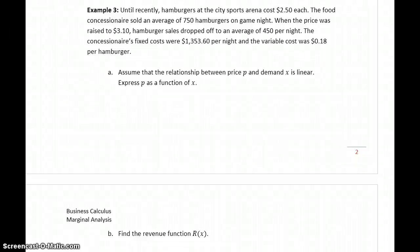In example three, we're given information on hamburger sales at the city sports arena, including costs and the corresponding average number sold. What we want to do is start off by first assuming that the relationship between price P and demand X is linear. That means we're going to come up with some equation of the form Y equals MX plus B. We want to express P as a function of X, so meaning we want P to equal MX plus B.